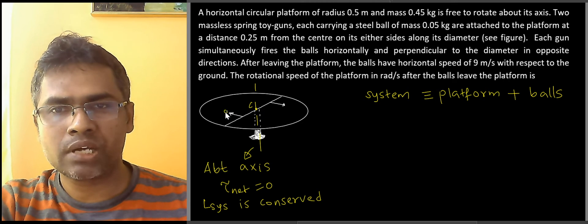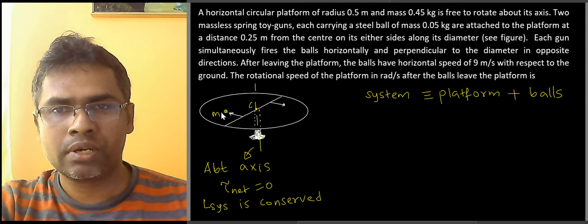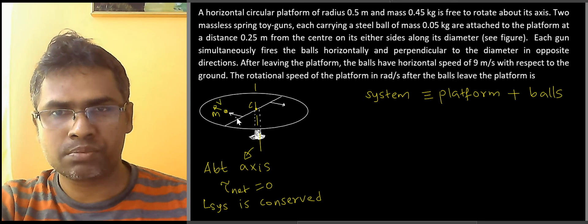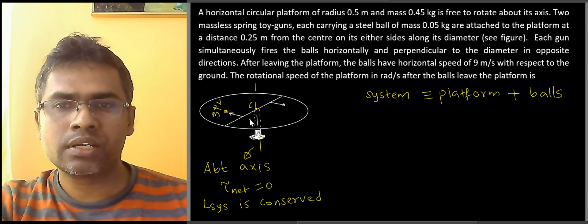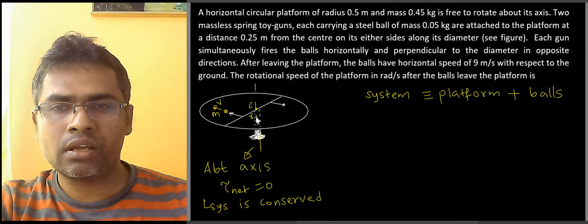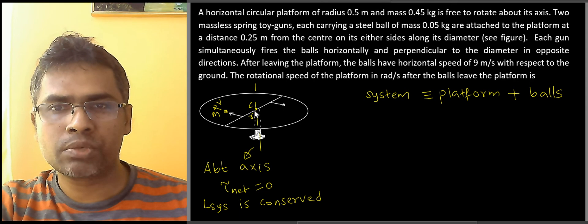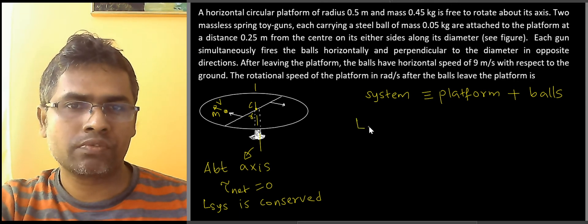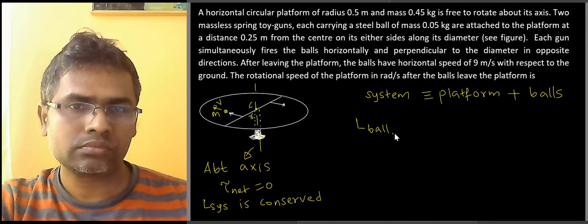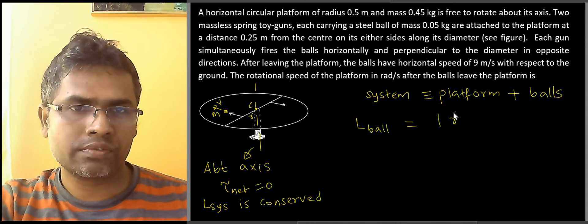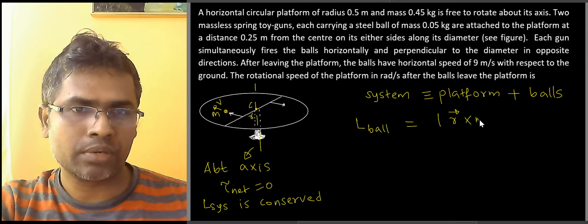Suppose if I take the mass of the ball as m and the velocity with which a ball is fired is v for this particular ball, let us say this distance is r. If I get the angular momentum of the ball, it is like angular momentum of a particle relative to the axis. So we can say angular momentum of each ball is a cross product of the position and the linear momentum.